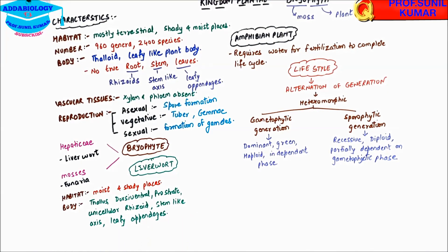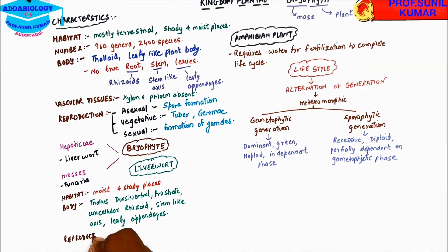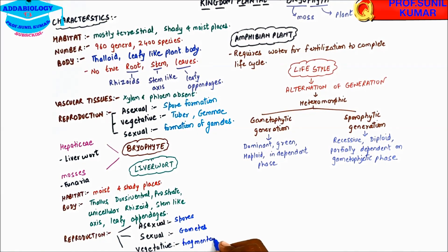When we go with respect to reproduction of liverwort, they reproduce asexually, sexually, and by vegetative method. Whenever we talk about asexual reproduction, it takes place by spores, sexual reproduction by fusion of gametes, and vegetative by fragmentation or gemmae.